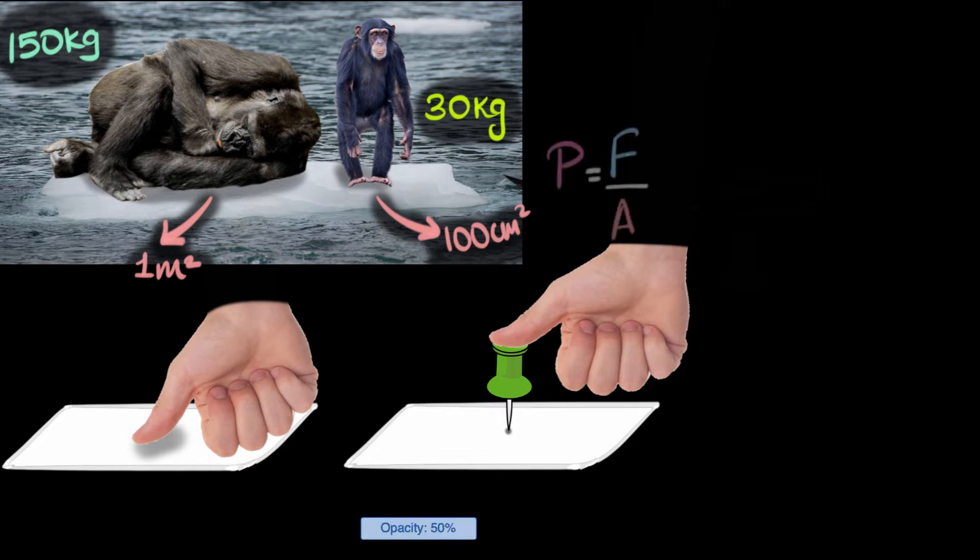And how do we calculate pressure? We calculate pressure as force divided by area. That's what it is. How much force is getting divided by the area, right? And we've talked a lot about this in a previous video called Thrust and Pressure. And so if you need more clarity on where this formula comes from, great idea to go back and watch that video.